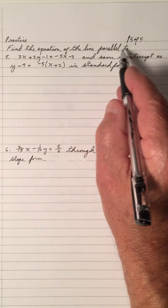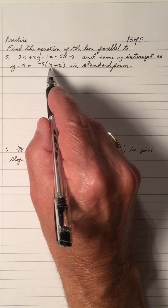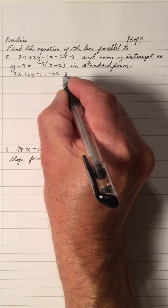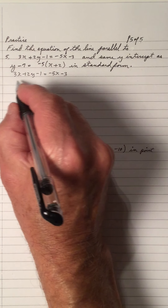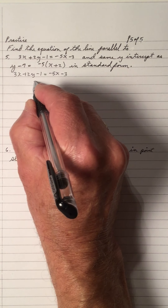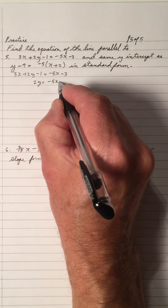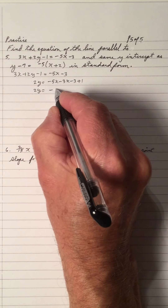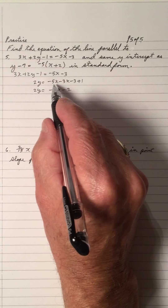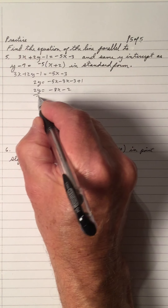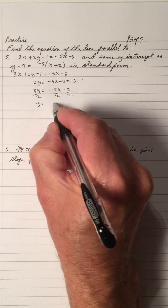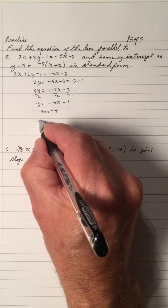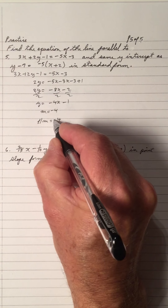Find the equation of a line parallel to this line with the same y-intercept as this one. Notice there are more variables here. To find the slope, I solve for y. Y stays on the left; bring 3x over to get negative 3x; bring the negative 1 over to get plus 1; simplify the right side to get negative 8x minus 2. Then divide all terms by 2: y equals negative 4x minus 1. So the slope of that line is negative 4, and the parallel slope is also negative 4.